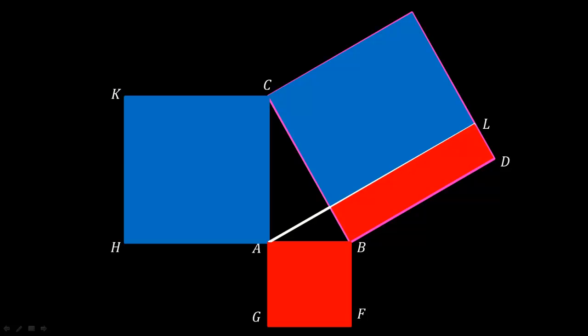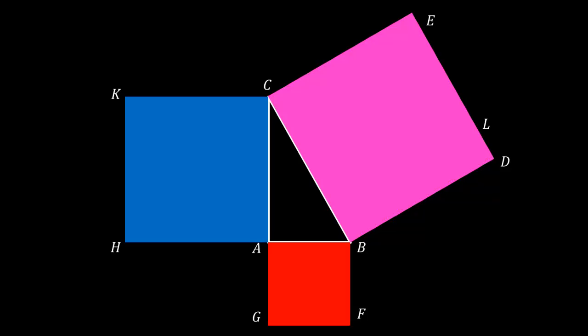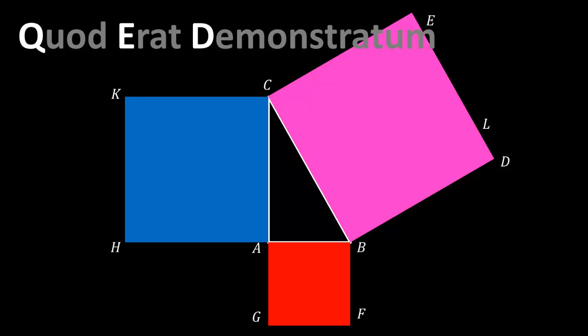So we've shown that the red square has the same area as the red rectangle, and the blue square has the same area as the blue rectangle. But we also know that the red rectangle and the blue rectangle add up to the pink square. Thus, we have shown that the areas of the red square and the blue square add up to the area of the pink square. A squared plus B squared equals C squared, which is exactly what we were trying to show.